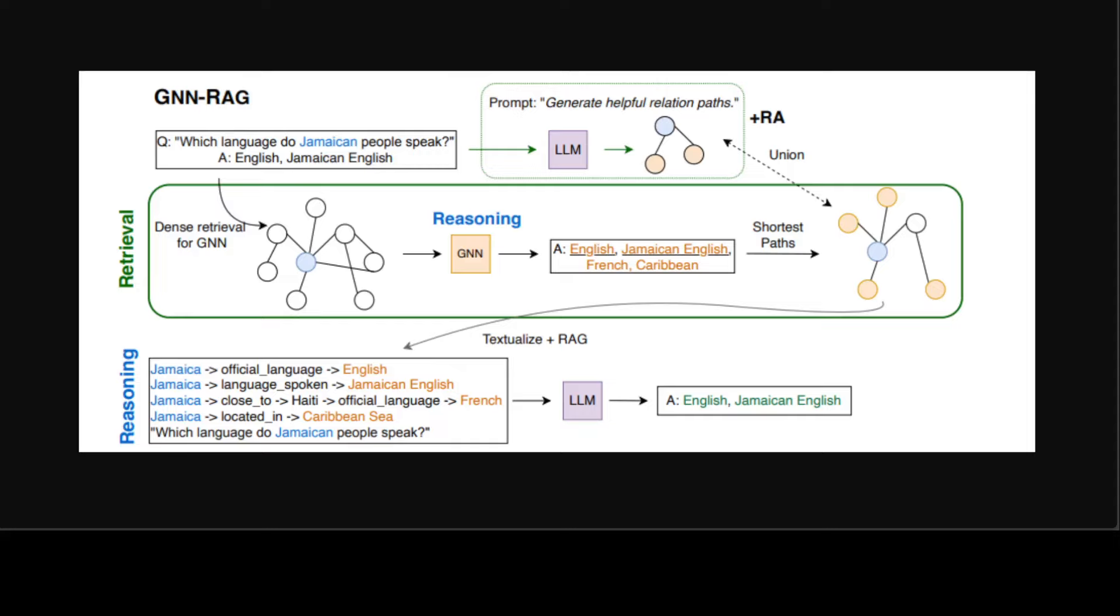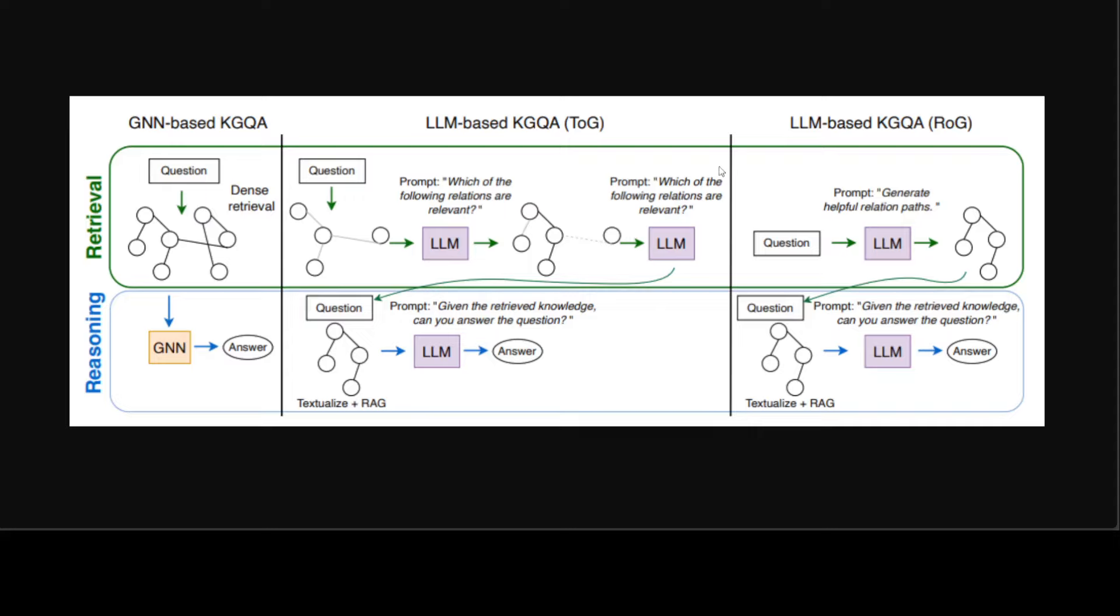Whereas IR methods or the information retrieval methods focus on the weakly supervised KGQA setting where only question answer pairs are given for training. IR methods retrieve KG information such as KG subgraphs which I showed you in the previous diagram. So these are the different landscape of existing KGQA methods.